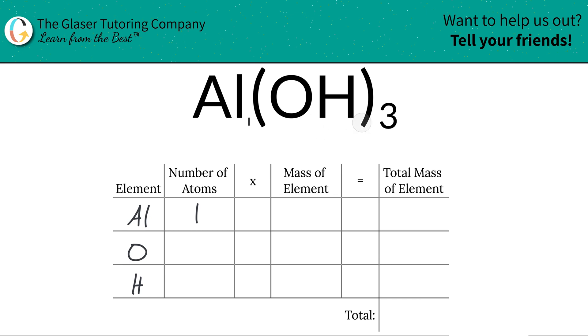I'm not going to leave those subscripts down there, but I hope you get the point. So there are three atoms of each. Then what we're going to do is we're going to take those number of atoms and then multiply it by the mass of each particular element. So we use the periodic table to help us out.